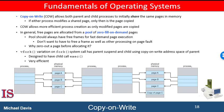Several versions of Unix provide a variation of the fork system call called vFork, which stands for Virtual Memory Fork. It operates differently from fork with copy-on-write. With vFork, the parent process is suspended and the child process uses the address space of the parent. Because vFork does not use copy-on-write, if the child process changes any of the parent's address space, the altered pages will be visible to the parent once it resumes. So vFork must be used with caution to ensure that the child process does not modify the address space of the parent. vFork is intended to be used when the child process calls exec immediately after creation, and because no copying of pages takes place, it is an extremely efficient method of process creation, sometimes used to implement Unix command line shell interfaces.